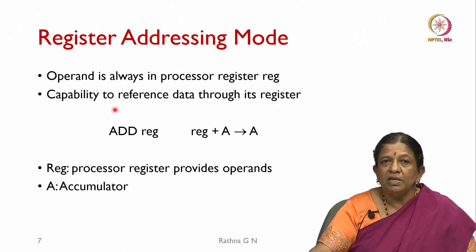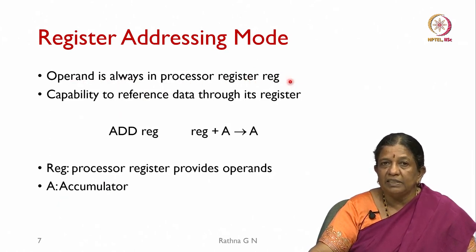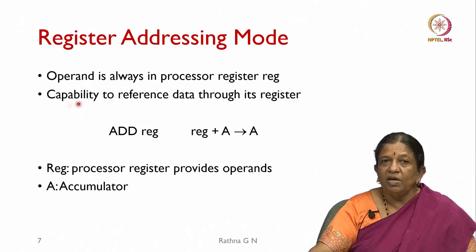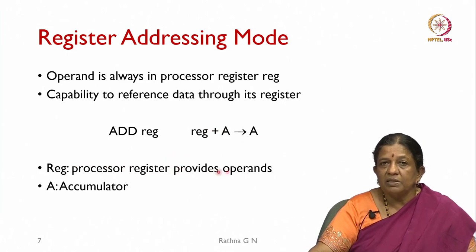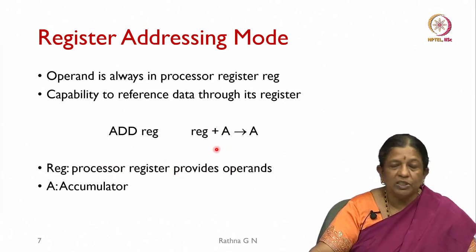In register addressing mode, the operand is always in the processor register. We say 'ADD REG', meaning the value stored in the register is added with the accumulator and the result goes back to the accumulator. REG is the processor register that provides the operand.